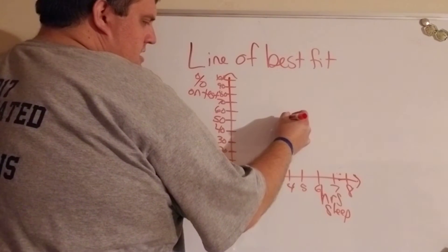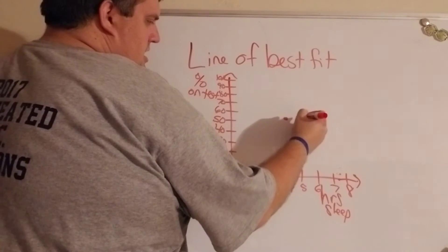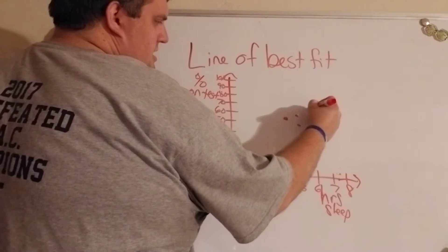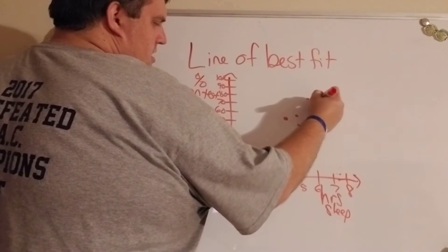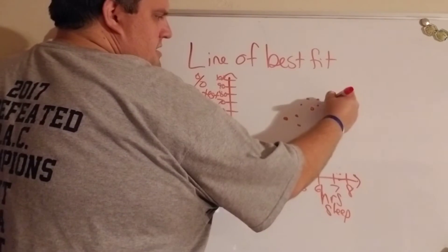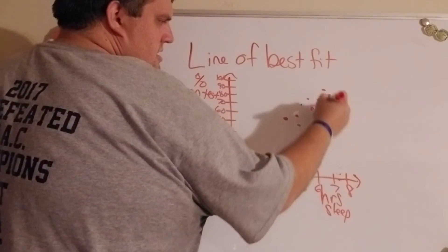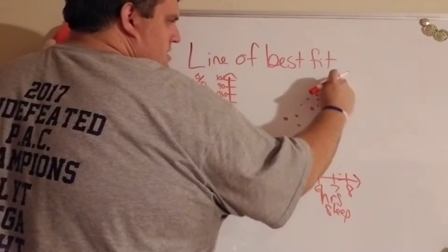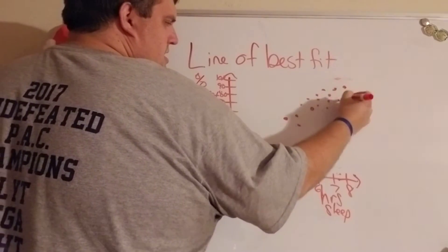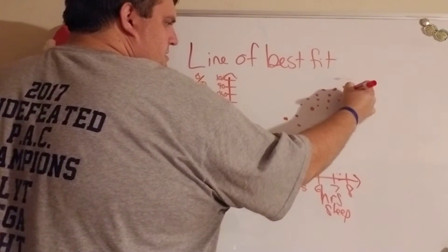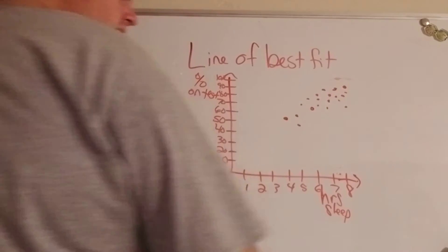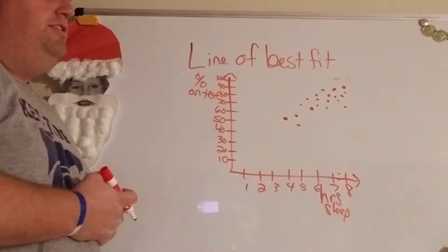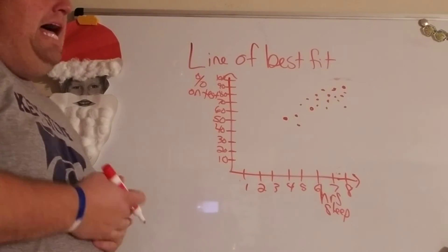This kid slept four hours and got a 62. A couple of kids slept five hours, these kids slept six hours or a little over six, some are in the sevens and eights. We don't want to go above 100, but that kid who slept eight hours got a 100. So here's my scatter plot — it has a positive relationship.